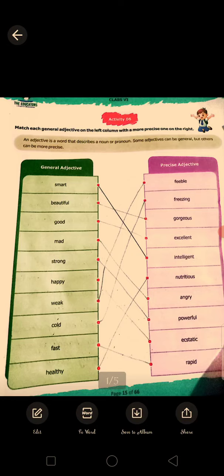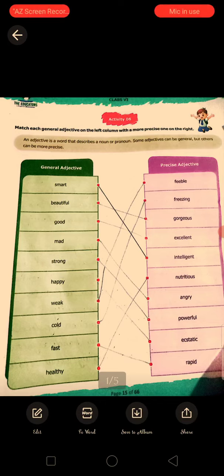There are two columns on this page. One column is general adjectives and the other column is precise adjectives. First, we will match smart with intelligent.